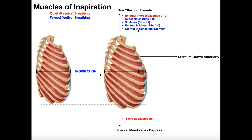The goal of all this is to increase the size of the thoracic cavity even more above what it was during quiet inspiration — pull the ribs up more, pull the pleural membranes down more, draw the sternum anteriorly — and all of those things increase the size of the thoracic cavity, allow the pressure in the lungs to drop even more, and allow more air to come in.